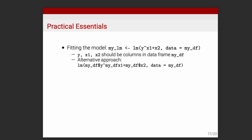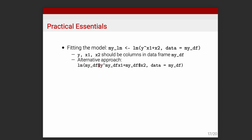The formula tells R: find the Y variable in my_df and model it as a linear function of x1 and x2, then fit OLS using that structure. You could add a zero in the formula — like 0 + x1 + x2 — to remove the intercept term. There are also alternative approaches to fitting these models, like explicitly specifying the outcome vector, but it's better to keep it simple.